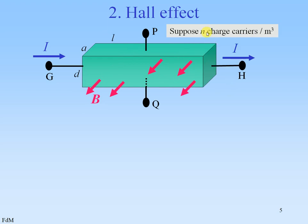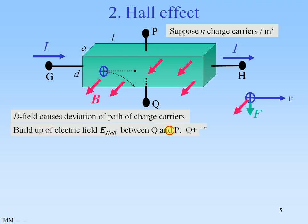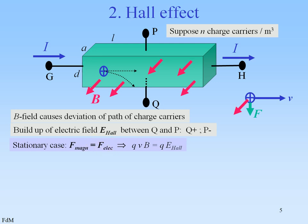The Hall effect. Suppose we have N charge carriers per cubic meter in a block of material. There is a current I through the block and an external magnetic field. That B field will cause a deviation of the path of the charge carriers, caused by the Lorentz force. There will be a build-up of an electric field — the Hall field — between Q and P, in which Q will be positive and P will become negative. In the stationary case, the build-up will go on until the magnetic force and electric force balance each other, and in that case QVB will be equal to QE Hall. Then we write J as NQV, or equal to I over the cross-section area AD.